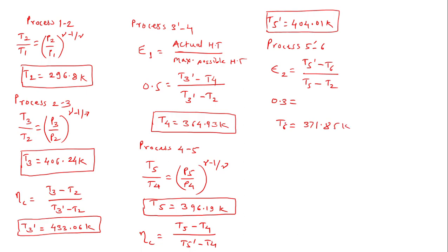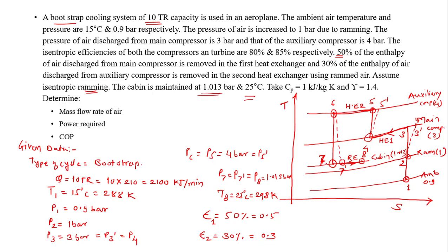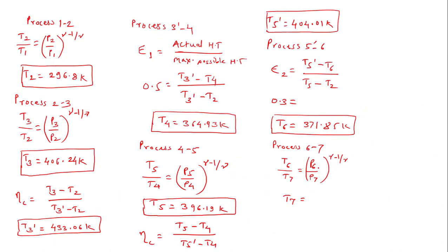The next process is expansion in the turbine, process 6 to 7, which is isentropic. The formula is T6 by T7 equals (P6 by P7) raised to (gamma minus 1) upon gamma. P6 is 4 bar and P7 is 1.013 bar. With T6 already calculated, substituting these values gives T7 as approximately 251.16 Kelvin.